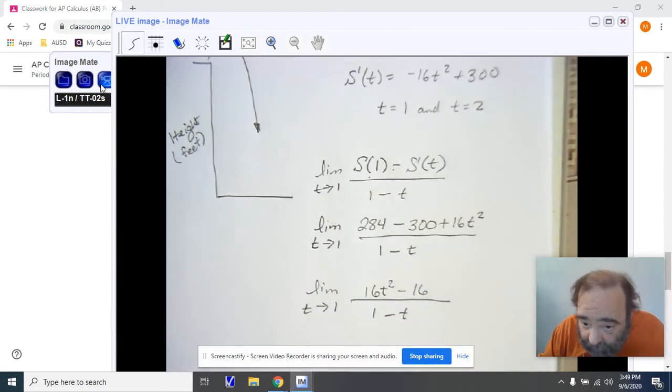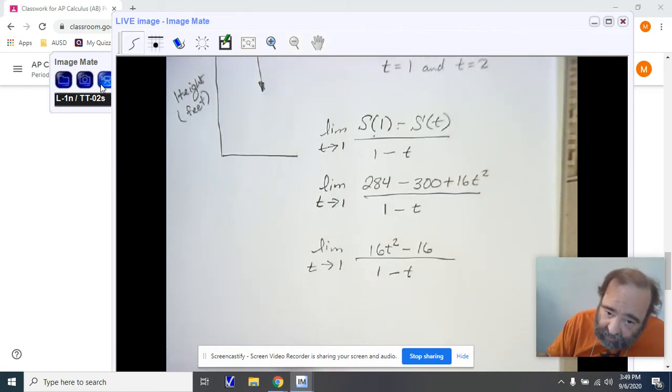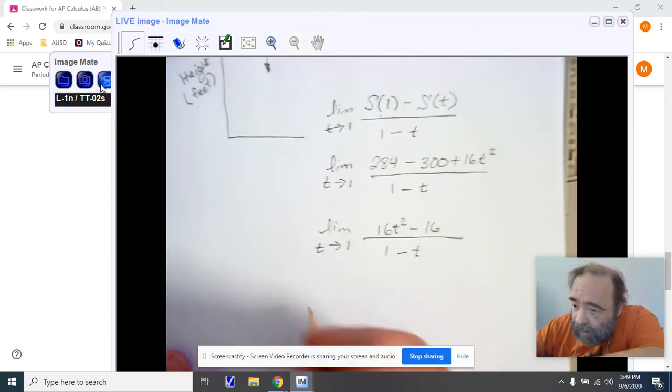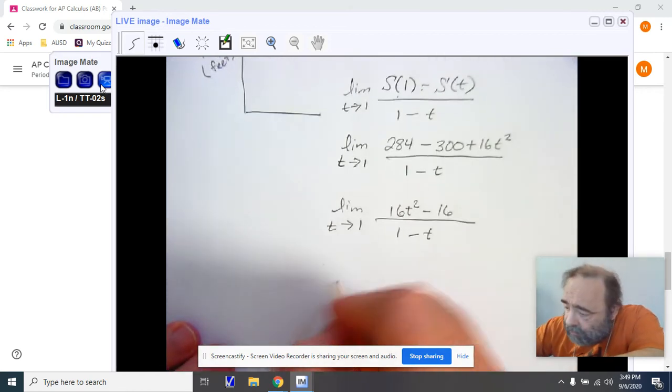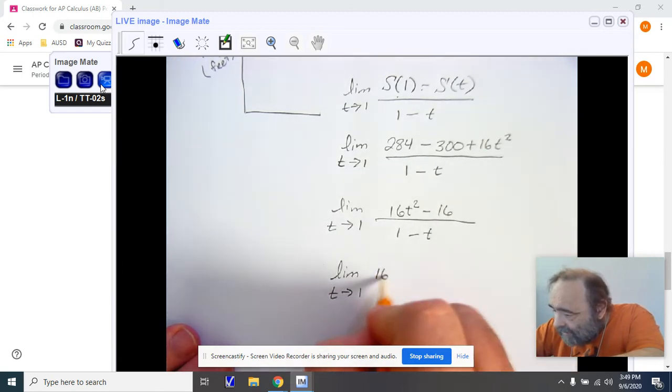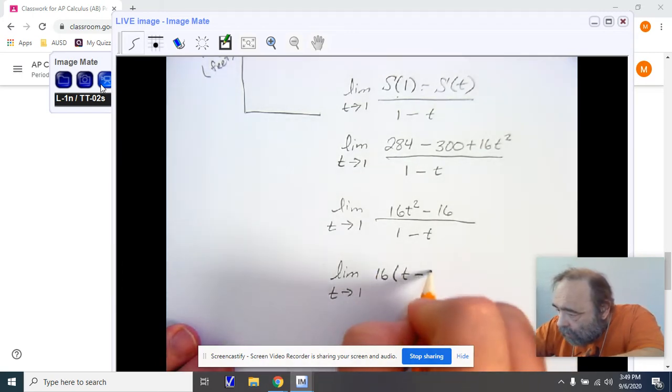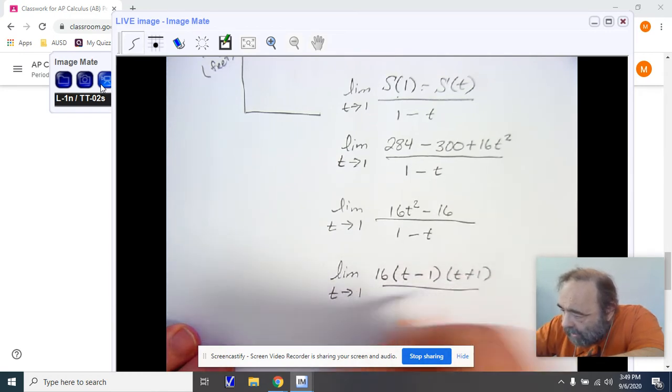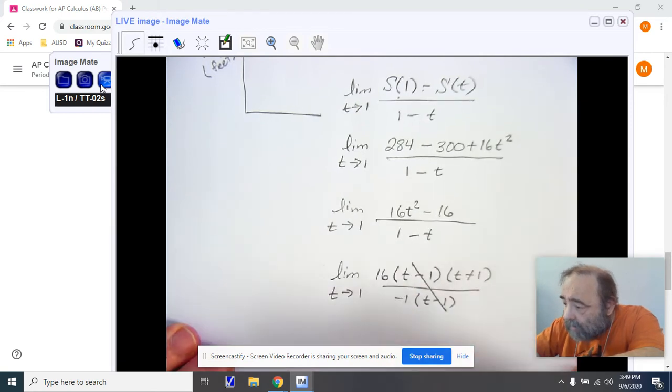Now, I can factor out a 16. I can factor down the t squared minus one into t plus one, t minus one. And I can factor out a negative out of the denominator. All of this is our basic algebraic simplification. The limit as t approaches one for 16(t minus one)(t plus one) divided by negative one times (t minus one). T minus ones cancel.